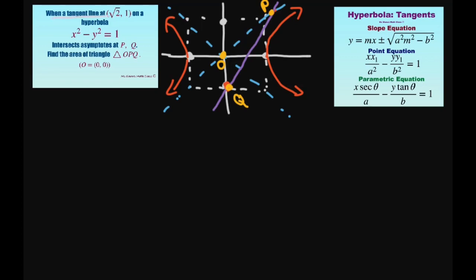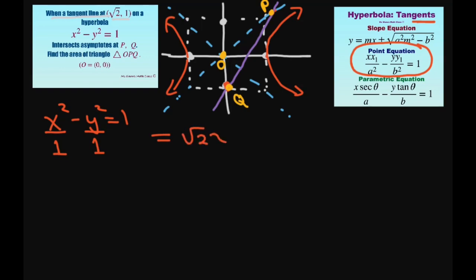We want to look at the tangent line at (√2, 1) on this hyperbola. Since we're looking at that, we're going to use the point-tangent equation for hyperbola tangents. For x² - y² = 1, a² = 1 and b² = 1. So using this equation, we get √2·x - 1·y = 1. That's the equation of the tangent line — I put it in purple here. Rewriting: y = √2x - 1, with y-intercept at -1.